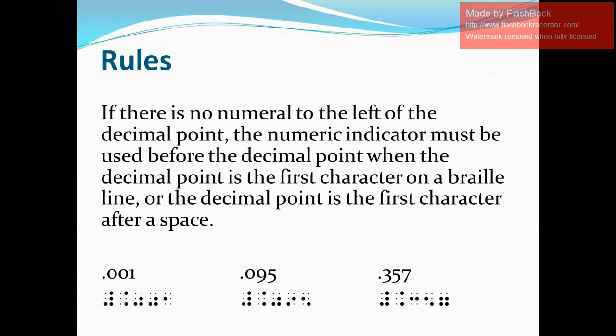And our last example for this rule: 0.357. In Nemeth, we write the numeric indicator, the decimal point, and then the digits 3, 5, and 7.